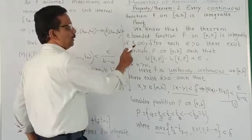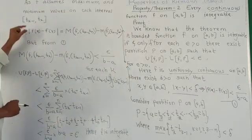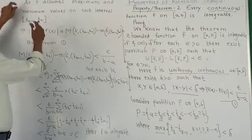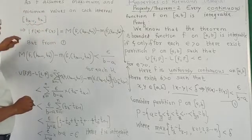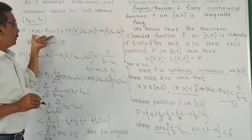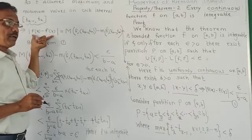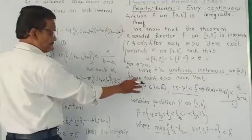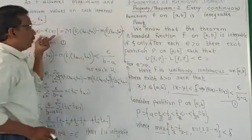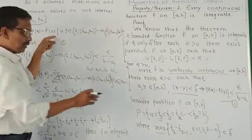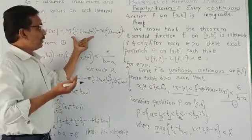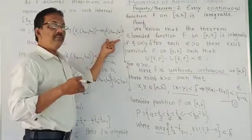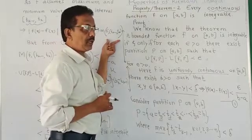And we assume the minimum value on its interval [tk-1, tk]. Now, |f(x) - f(y)| for x and y belongs to [a,b], we write here: for each x, y belongs to [tk-1, tk].